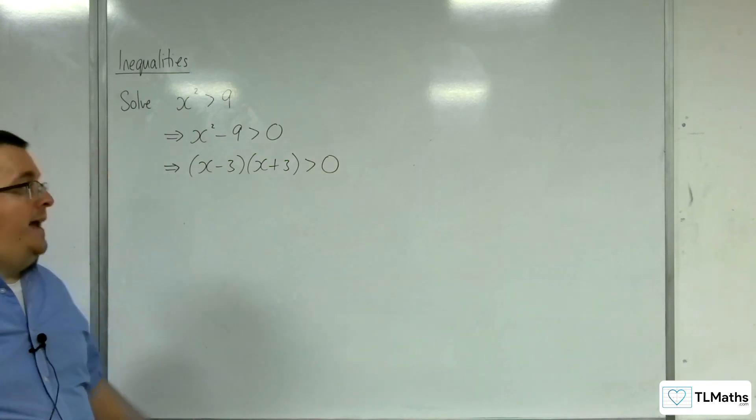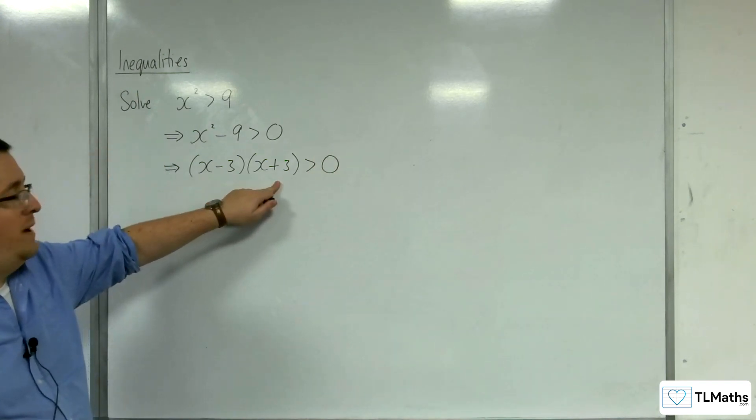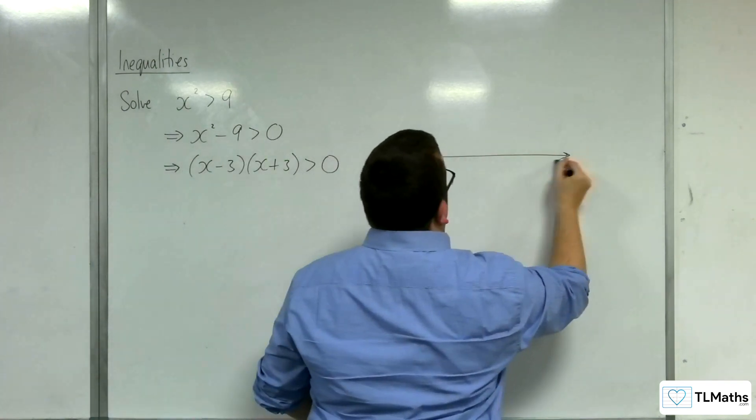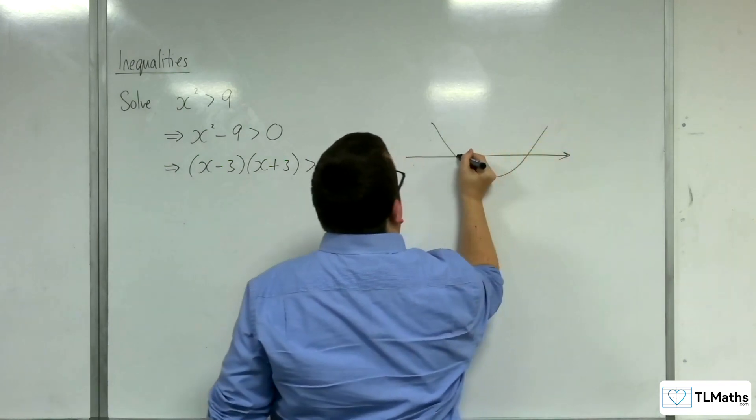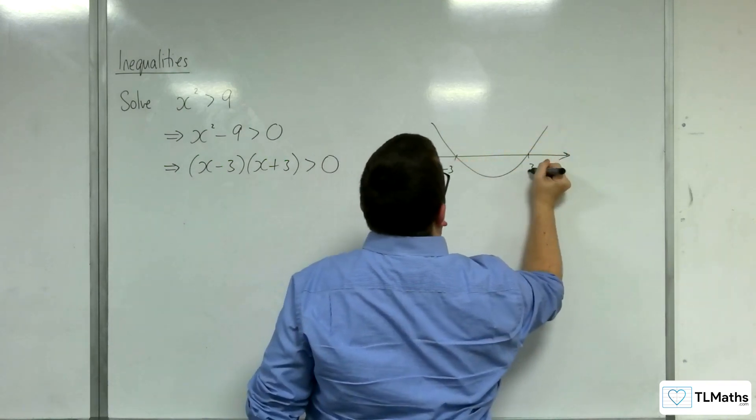I then sketch y equals (x minus 3)(x plus 3). So a very basic sketch. I'm not going to bother putting on the y-axis. This is a parabola that's going to intersect the x-axis at minus 3 and 3.